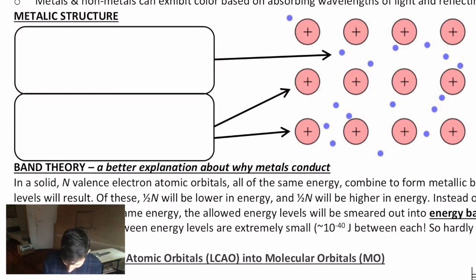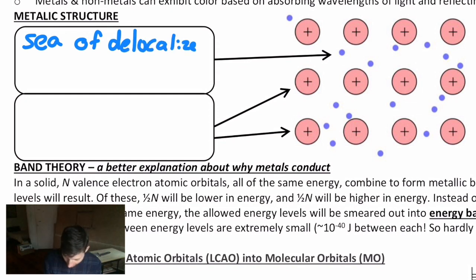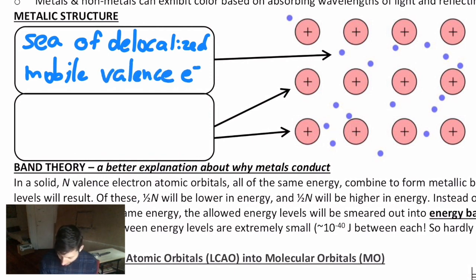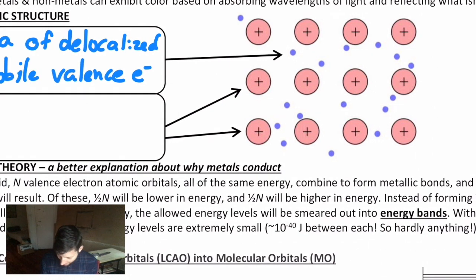There is a sea, what we often call a sea, of delocalized, meaning not localized, mobile valence electrons. And there they are, scattered throughout this array of positively charged nuclei.